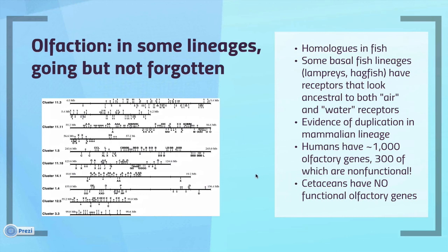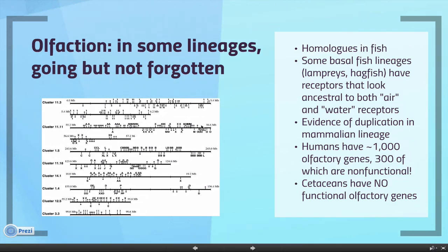Cetaceans — dolphins and whales — have exactly zero functional copies of their olfactory genes, because they do not use their nasal passages for smelling at all. Selection to maintain those genes for their original function is completely relaxed. But the point is, if you sequence the genomes of humans or cetaceans, you still see all of these genes — even if non-functional, you see a vestige of them in the DNA, a vestige of our evolutionary past and our relationship with other mammals and even with fish.